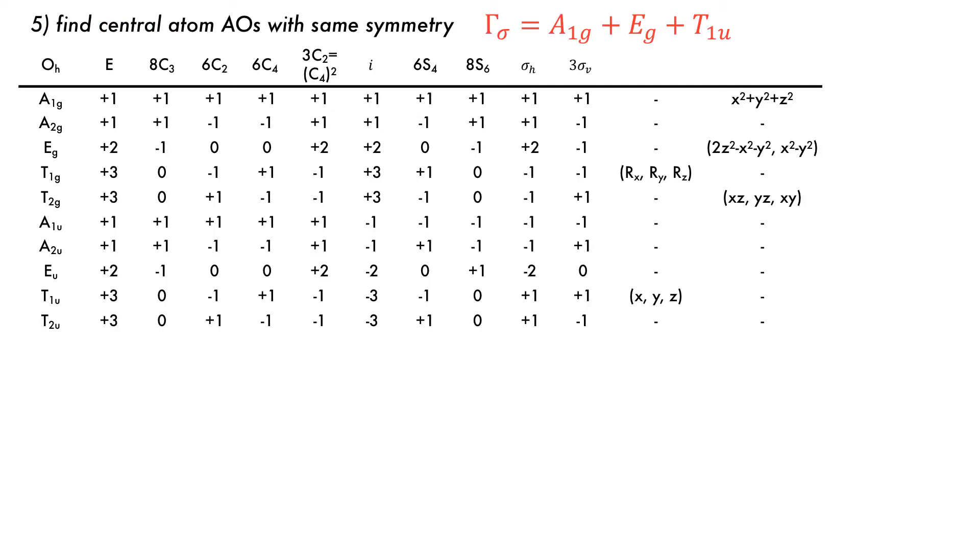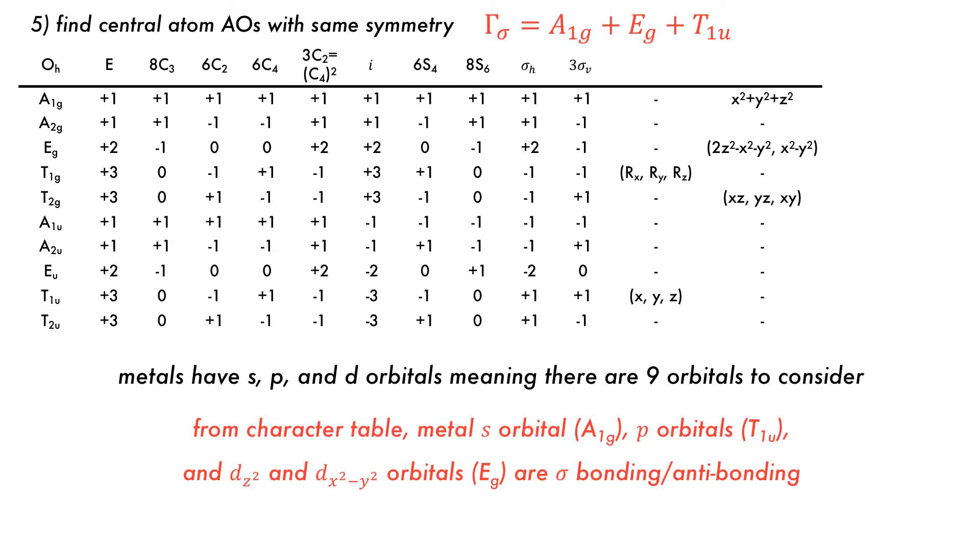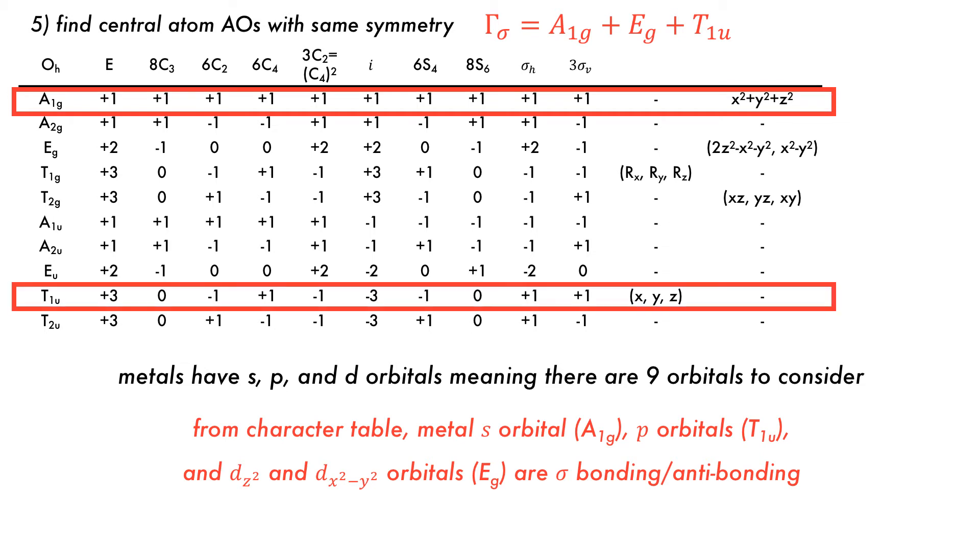Now the symmetries of the group orbitals need to be compared to that of the central atom using the character table. Metal atoms have sp and d valence orbitals, giving a total of nine orbitals to be considered. Reading off the table, it can be seen that the a1g group orbitals match the metal s orbital. The t1u representing the metal p orbitals is also present in the group orbitals, and so make symmetry matched pairs.